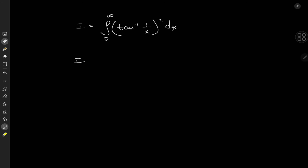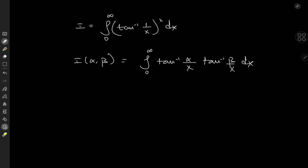We'll define the integral function I of alpha and beta, that is to say two parameters, as the integral from zero to infinity of arctangent alpha over x times arctangent beta over x. So that means our target integral is just a case of the integral function evaluated at alpha equal to 1 and beta equal to 1.